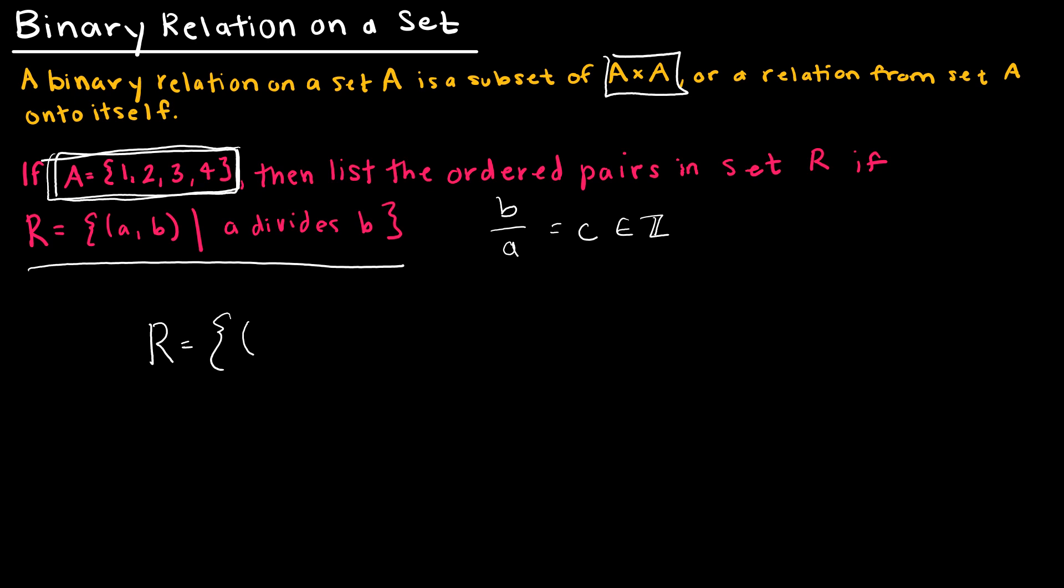That just means that it has to go into it evenly where there is no remainder. So let's take a look. I should have 1 comma 1, because again if I took 1 divided by 1, that's a whole number, or that's an integer. And if I took 2 divided by 1, that's an integer. So I've got 1 comma 2. Remember A divides B, so we have to make sure we're putting this in the proper order. And then 3 divided by 1 is 3, so 1 comma 3. And then 4 divided by 1 is 4, so 1 comma 4. So all of those, including 1, or using 1 as A, are in my relation.